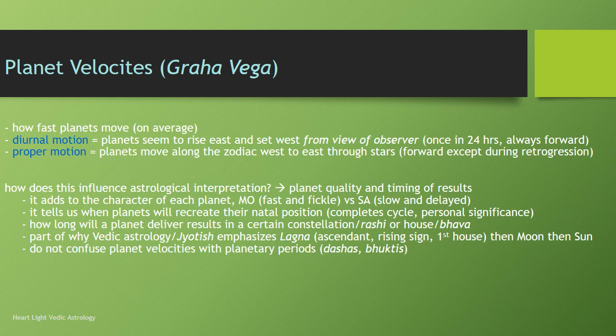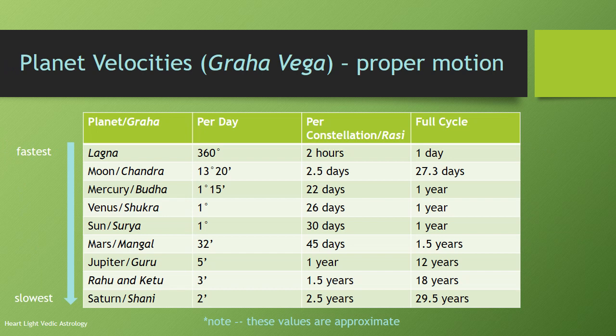So let's actually look at some numbers. Here we have a chart — planet velocities, graha vega — and this is proper motion, how fast they're moving through the zodiac. I've listed things from fastest to slowest, going from top to bottom. At the top we have the lagna. The lagna changes 360 degrees per day — it goes through the whole cycle once a day. Per constellation or rashi, on average it takes about two hours for the lagna to shift.